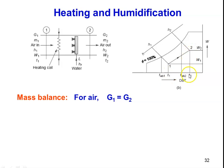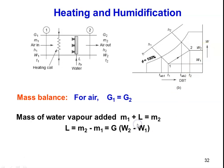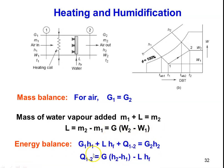T1 and T2 are the inlet and outlet temperatures; W1 and W2 are the specific humidities. For mass balance: G1 = G2 for air; M1 + L = M2 for water vapor, so water vapor added L = M2 − M1 = G·(W2 − W1). Writing the energy balance: G1·H1 + L·HF + Q = G2·H2, so heat added Q = G·(H2 − H1) − L·HF. This gives the amount of heat added and water vapor added during heating and humidification.